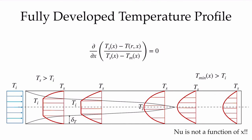Let's think about this further. If the non-dimensional temperature profile is not changing with location, recall that the non-dimensional temperature gradient at the wall is by definition the Nusselt number. In the fully developed region, if we have a non-dimensional temperature that is not changing with position, that means the Nusselt number will not be a function of position — the Nusselt number will be a constant value in our fully developed temperature region of the pipe.